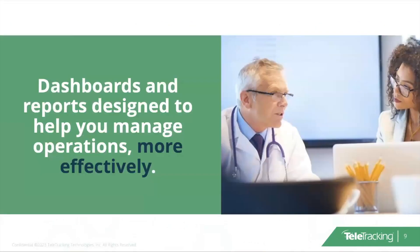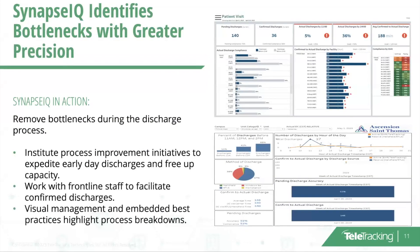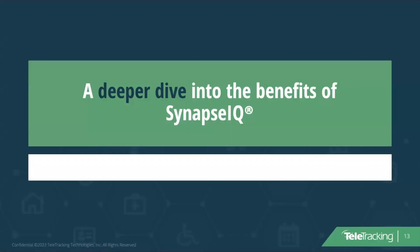With Synapse IQ, you have out-of-the-box reports and dashboards that have been created with the guidance of clinicians and throughput team members. Reporting is available in real time, so you and your team are able to make decisions with true situational awareness. You can improve discharge times by identifying bottlenecks in the discharge process and drive transparency and accountability across service lines. We will now turn it over to Leah to discuss how she and her team utilize Synapse IQ to improve patient flow and validate success in throughput with Capacity Management Suite.